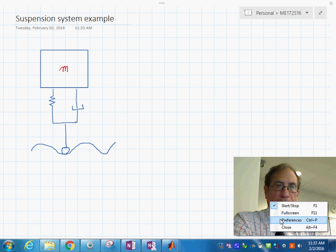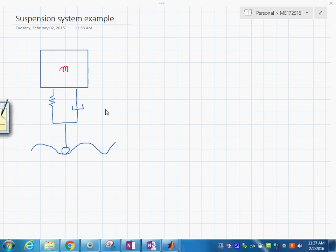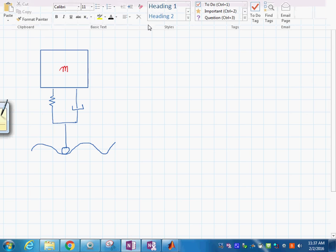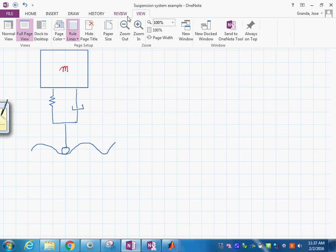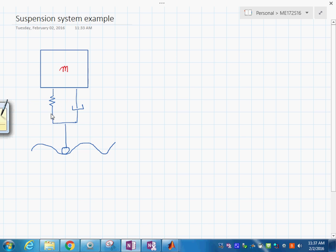Let's take a look at the example that we have on the screen. Here we have the mass of the system, and then you have this spring here which has a stiffness k. We have this damper that has a coefficient b, and then of course we have the ground.